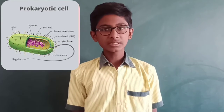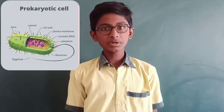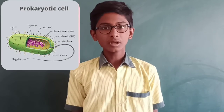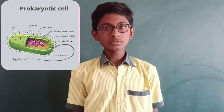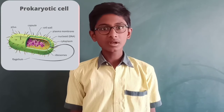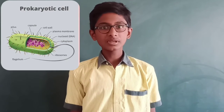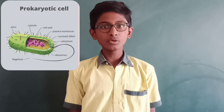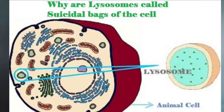In a prokaryotic cell, the nuclear membrane is absent. Membrane-bound cell organelles are absent, except for ribosomes — all other organelles are absent. There is a tough cell wall. Examples include cyanobacteria and blue-green algae.